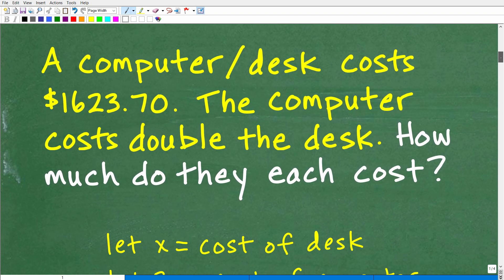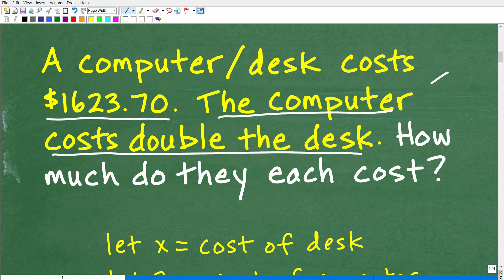All right, so again, here is the problem. A computer and desk together cost $1,623.70. The computer costs double the desk. So, this seems like it's going to be pretty important information for us. Obviously, we're going to have to use this piece of information. And then, obviously, we're going to have to answer the question, which is, how much do they each cost? All right, so there's a couple different approaches here. But after you've read the problem a couple times, what we need to do is use some algebra to figure this out.